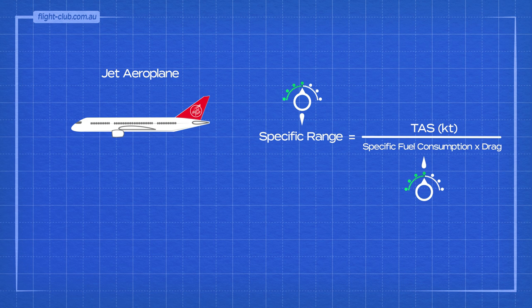There is one element remaining in the formula which we can improve on for better range. To increase range even more, specific fuel consumption can be decreased. One way to do this for a jet aeroplane is to fly as high as possible. Operating as high as possible provides higher true airspeed for any given indicated airspeed, which improves the specific range.